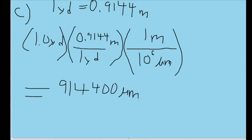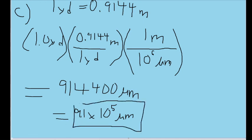914,400 microns. Or if you prefer to write this more simply in scientific notation, you could also write this rounded to two significant figures as 9.1 × 10^5 microns, if you don't mind shaving off a few non-zero digits. And that is our conversion for the number of microns in 1 yard.